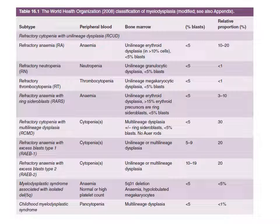Childhood myelodysplastic syndrome: in this case, we can see pancytopenia in small children — about two percent. If you do bone marrow, there may be multilineage dysplasia — disordered hematopoiesis in the bone marrow — but still blast count less than five percent. Again, patients are very few in number — less than one percent of patients will belong to this category. So this is the WHO classification for MDS.